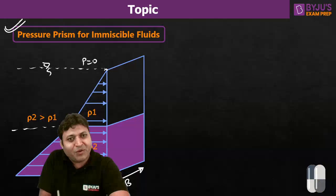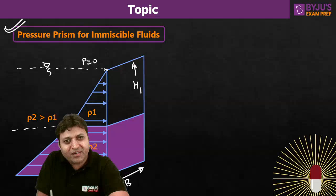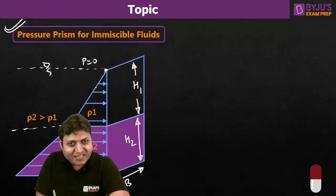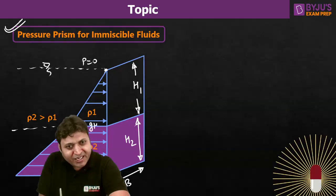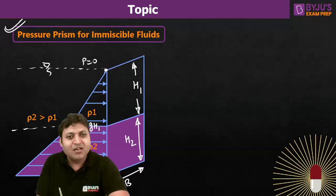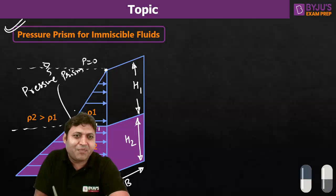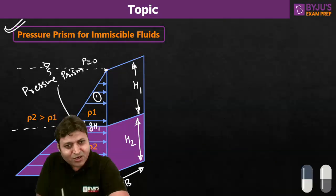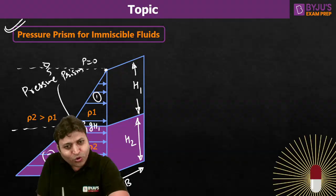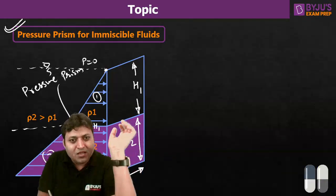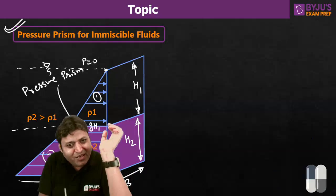If we draw the pressure diagram: pressure at the top equals zero and linearly increases with depth. Call the depth into fluid rho_1 as H1, and the height of the plane surface in fluid rho_2 as H2. The pressure at the interface will be rho_1 into g into H1, and at the bottom it will be rho_1·g·H1 plus rho_2·g·H2. This is the pressure diagram.